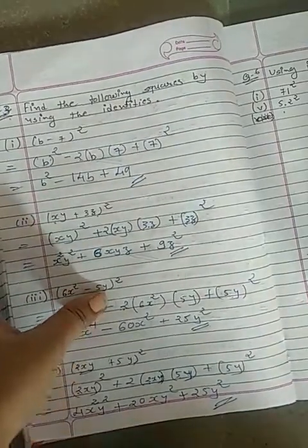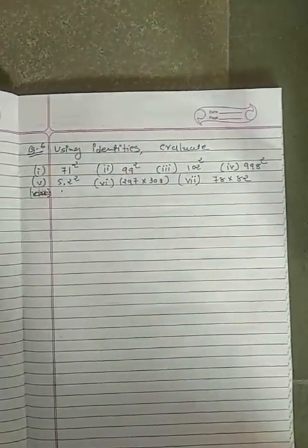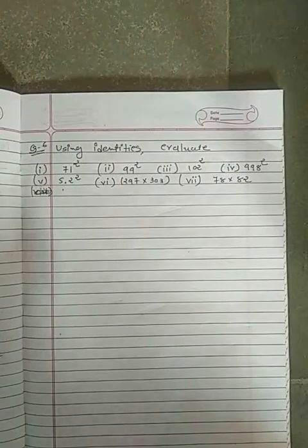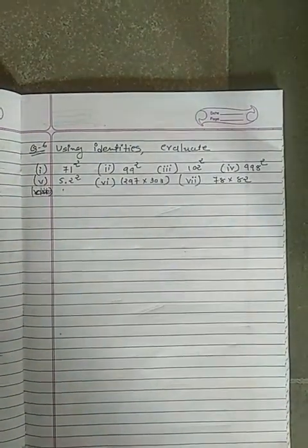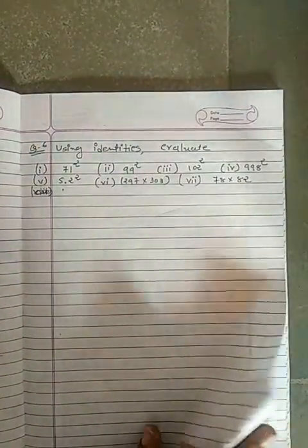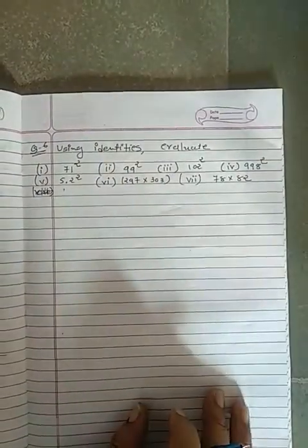Question number 6, sums 4 and 5 cancel. Only the last question remains, then our syllabus will be complete.